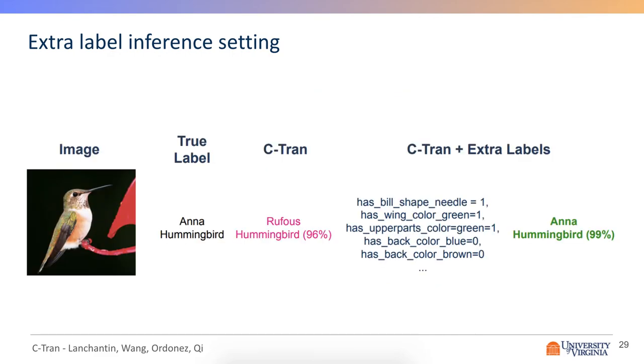So here's an example where the original prediction was incorrectly predicted as the rufous hummingbird. But if we say that we know it has certain features, such as a needle-shaped bill, then it can correctly predict the Anna's hummingbird class.